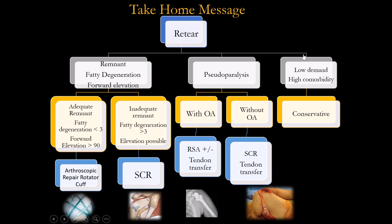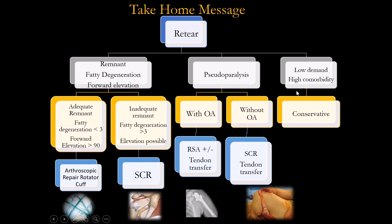Here is the decision algorithm for re-tear rotator cuff. First, assess whether there is enough tissue and fatty degeneration less than grade 3. If enough tissue — do revision cuff repair. If not enough tissue — consider superior capsular reconstruction. If the patient has pseudo-paralysis with no arthritic change — tendon transfer or SCR. If the patient has arthritic change — use reverse arthroplasty. If the patient is low demand and high age — conservative treatment.